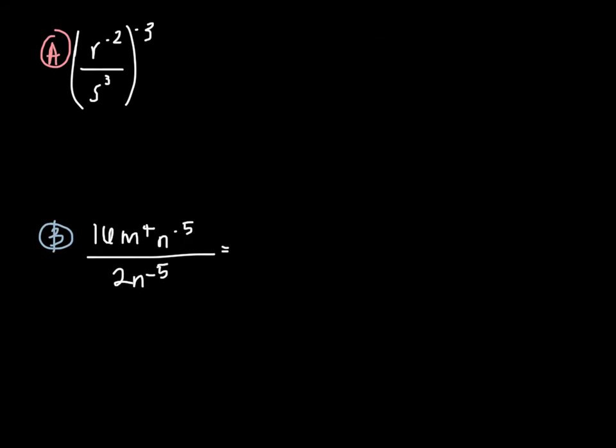Let's apply these properties to a problem. r to the negative 2nd divided by s to the 3rd, the whole thing raised to the negative 3rd. First, we can apply the negative 3rd to both r to the negative 2nd and s to the 3rd. Each of these is raised to the negative 3rd. Then we apply the property of when we raise a power to another power, we have a multiplication of those exponents. We have r to the 6th, because we have negative 2 times negative 3, over s to the negative 9th. This s moves up to the numerator because it's negative, so we have r to the 6th s to the 9th.